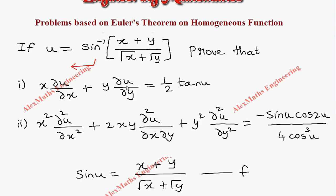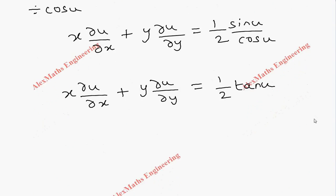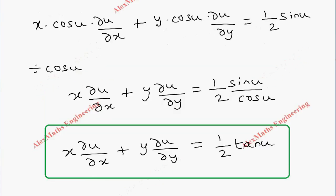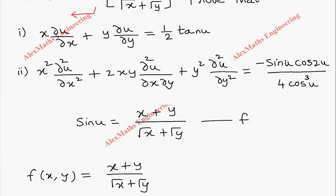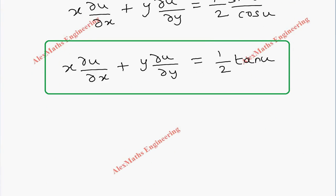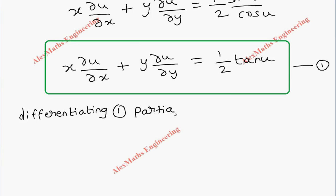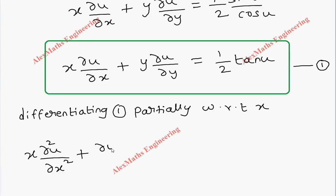The first part of the proof is x · ∂u/∂x + y · ∂u/∂y = (1/2)·tan(u). For proving the second part, we take this result as expression (1) and differentiate it partially with respect to x using the product rule. The first term gives: x · ∂²u/∂x² + ∂u/∂x. The second term gives: y · ∂²u/∂x∂y.